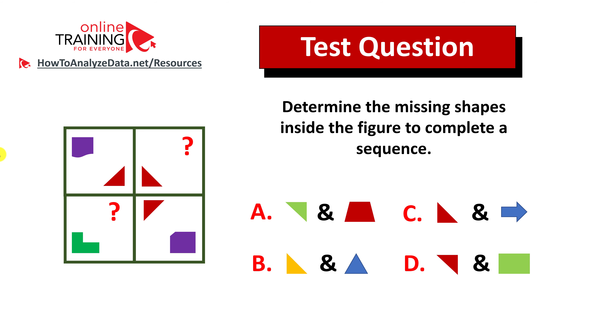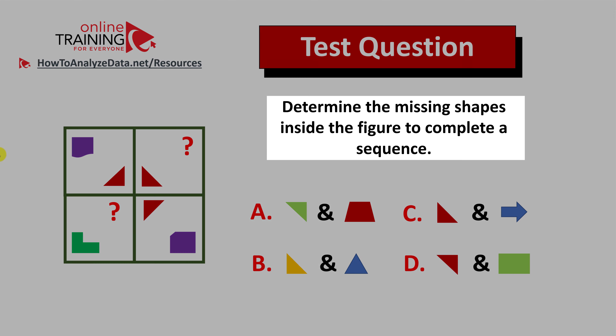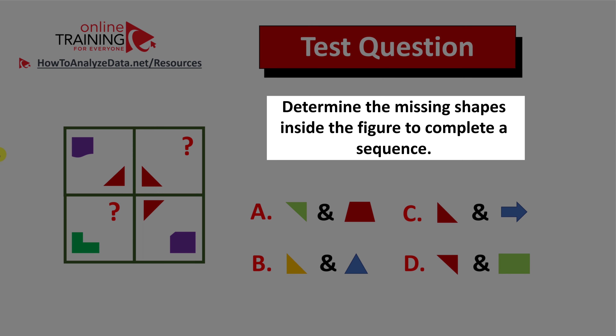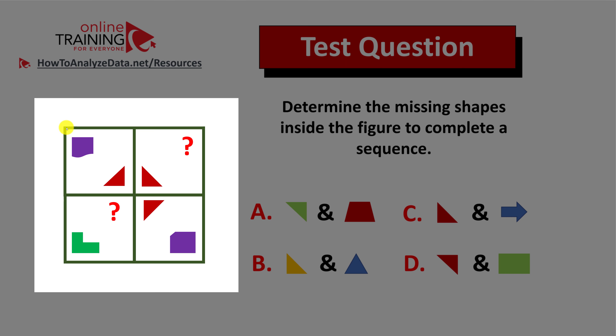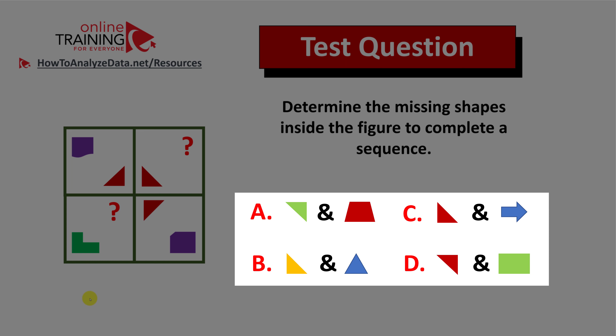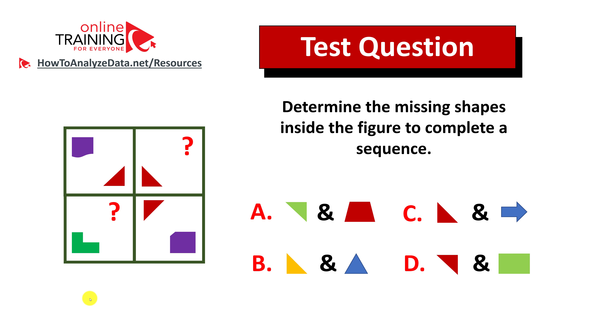Let's look at an interesting question which tests your pattern recognition skills. Determine the missing shapes inside the figure to complete the sequence. You're presented with a two-by-two figure — it has two missing shapes — and you have four possible choices: A, B, C, and D. Do you see the answer? Now might be a good time to pause this video and give yourself 10 to 20 seconds to come up with the solution on your own.